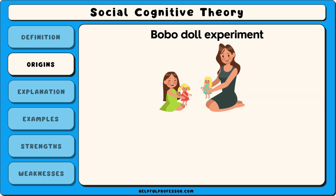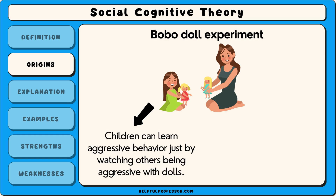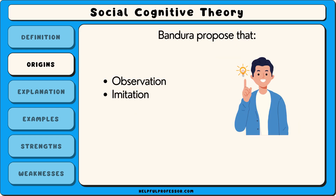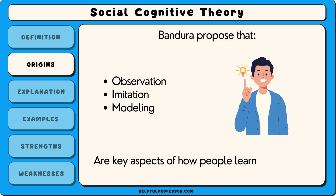His famous Bobo Doll experiment showed that children could learn aggressive behaviour just by watching others without directly experiencing any consequences. This led him to propose that observation, imitation and modelling were key aspects of how people learn, which became the foundation for social cognitive theory.